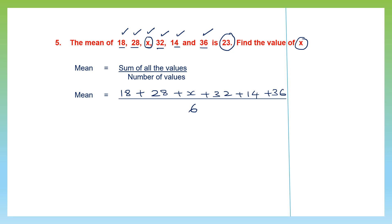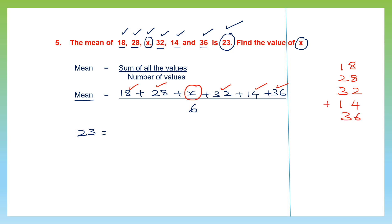The mean is already given to us as 23. Let's add up all the known numbers: 18, 28, 32, 14, and 36. Adding the units: 8 plus 8 is 16, plus 2 is 18, plus 4 is 22, plus 6 is 28 — carry 2. Working through the tens: we get 128. So this is 128 plus x divided by 6.